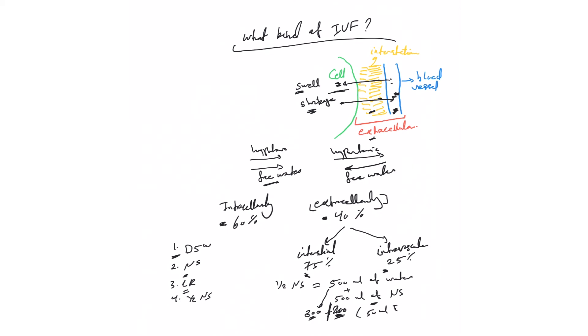What else do we have? 500 of NS, so 75% interstitial and 25% will go into the intravascular. So basically this is plus 125, so you have a total of 50 of water and 125 of NS based on this will remain intravascularly.